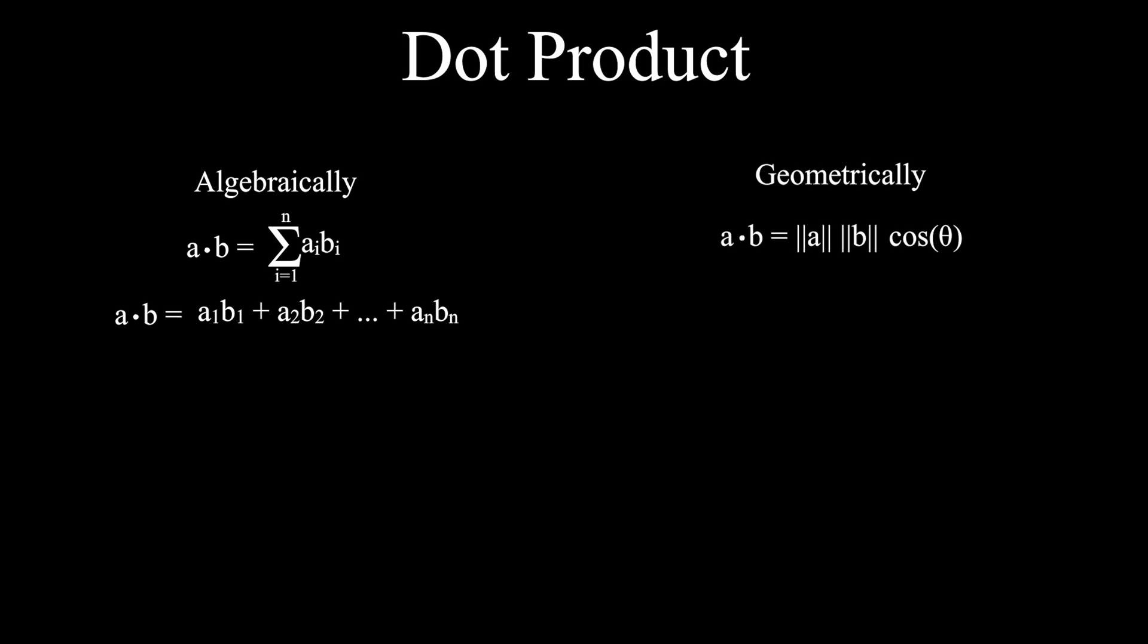Geometrically, all we really need to do is look at the cosine of theta, as magnitudes a and b are just lengths. So the dot product will be positive if the cosine of theta is positive, or negative if the cosine of theta is negative.